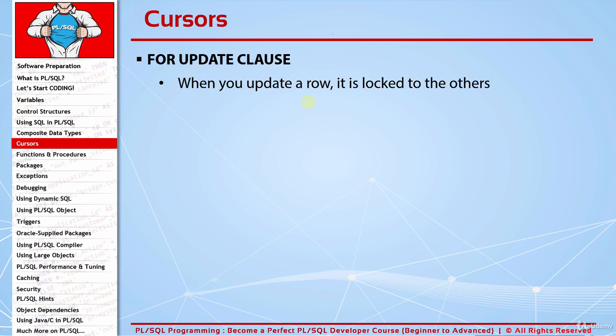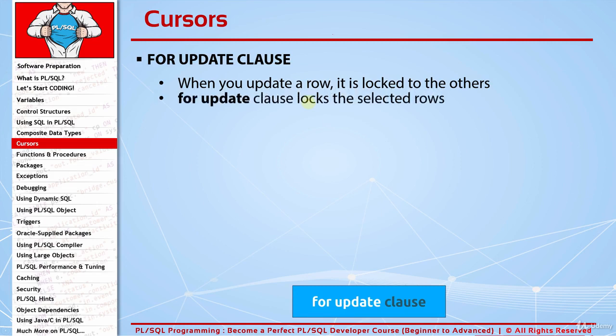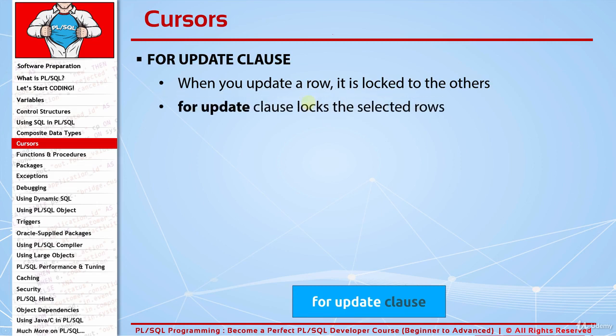Instead, cursors have a very efficient feature: the FOR UPDATE clause. FOR UPDATE locks all rows of the SELECT query in one step as soon as you open the cursor. They are unlocked when you commit or rollback. This way you lock all rows without doing any DML operations, which is much more efficient. FOR UPDATE is written as the last statement of our SELECT statement.